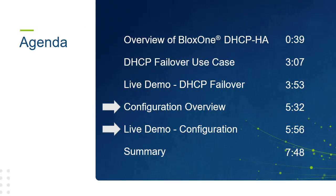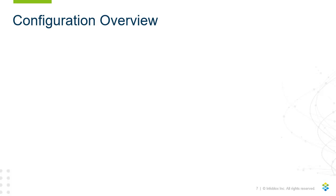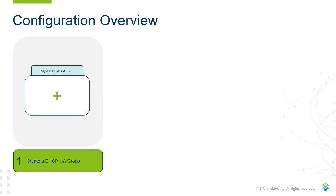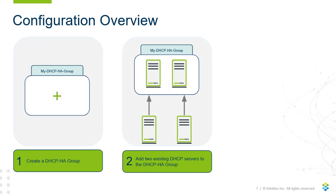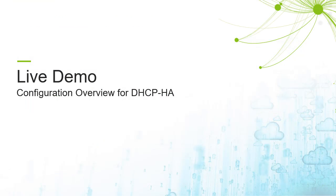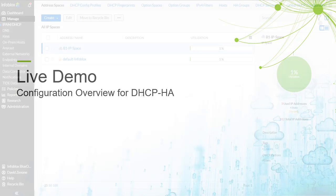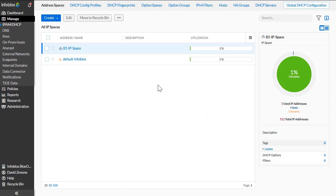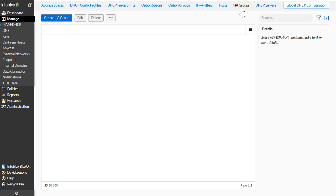Now let's take a quick look at how to set up and configure this feature. First, create a DHCP HA group. Then add two existing DHCP servers to the newly created High Availability group and select the HA configuration desired. Finally, assign the DHCP High Availability group to a desired subnet. On the IPAM DHCP page, click on High Availability Groups, then click on Create HA Group.